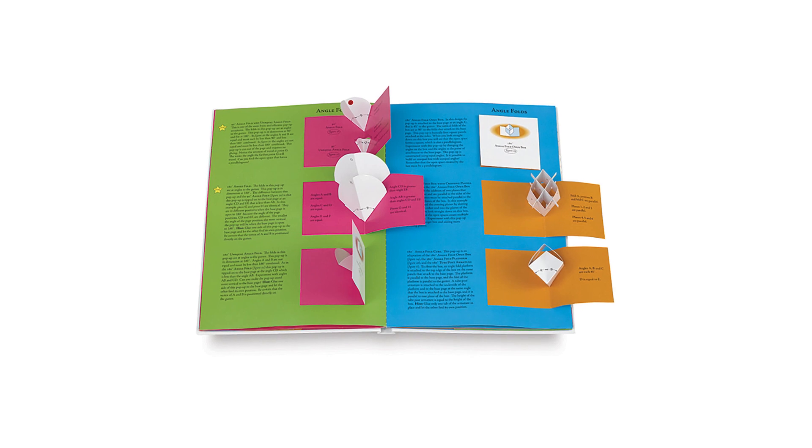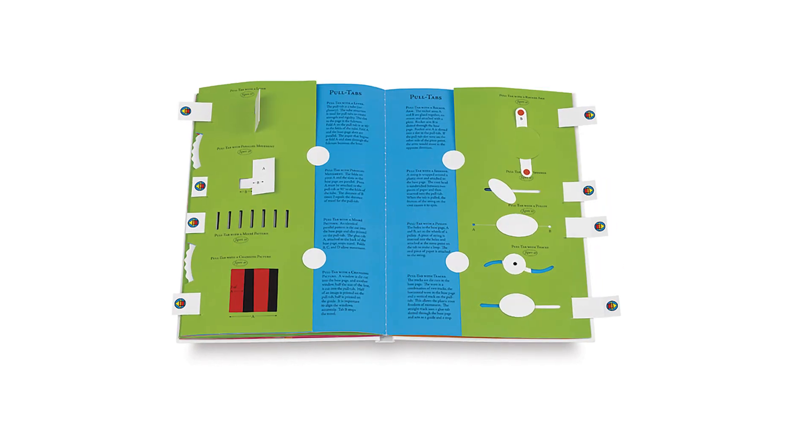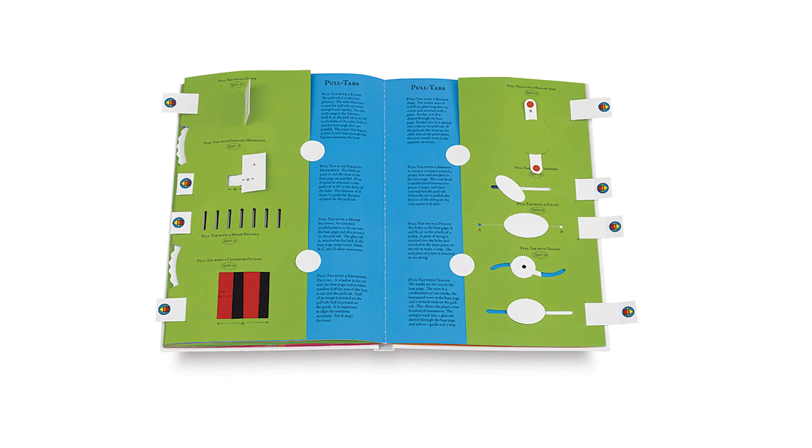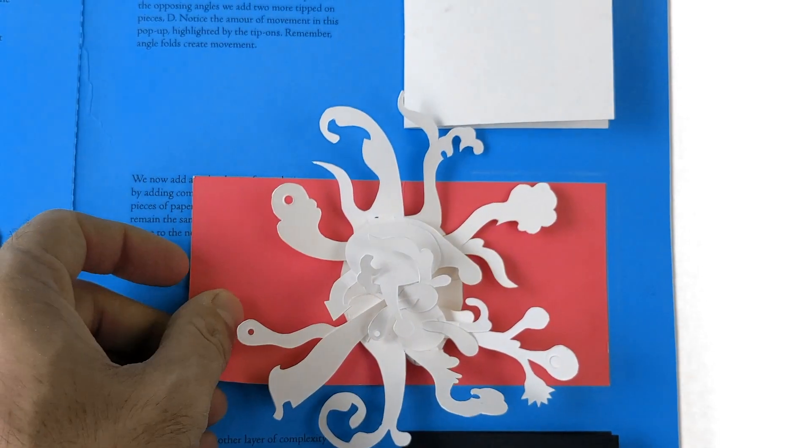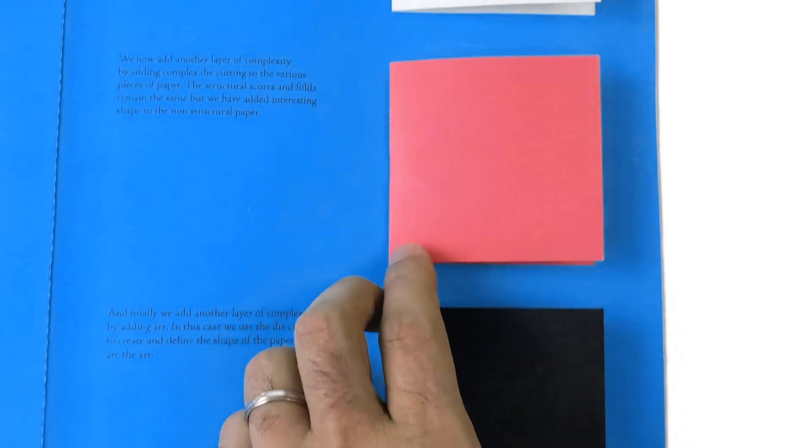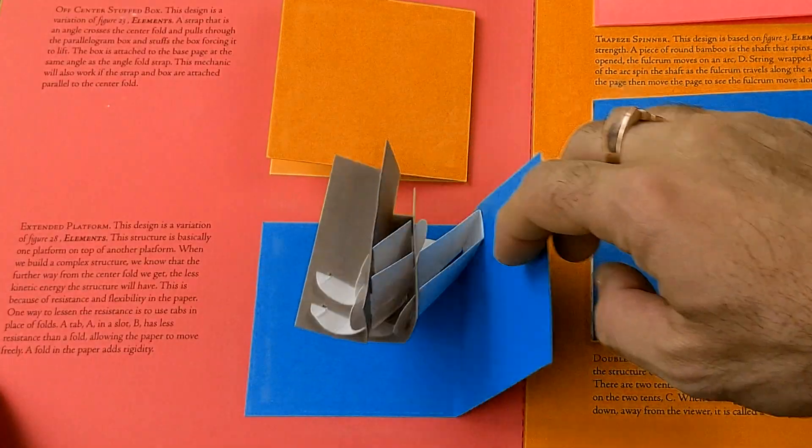In Elements, you learned the 44 basic structures that make up the general palette of paper engineering. In Complexities, you'll learn how to combine those basic structures into much more elaborate and impactful paper sculptures and pop-up mechanisms.